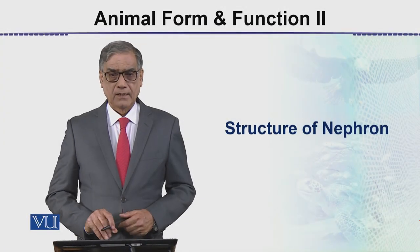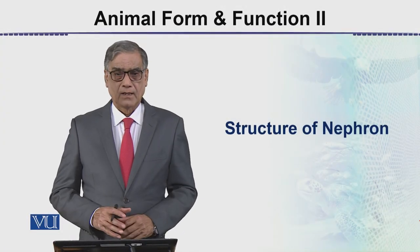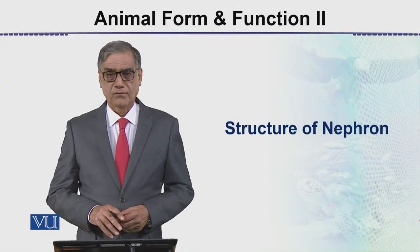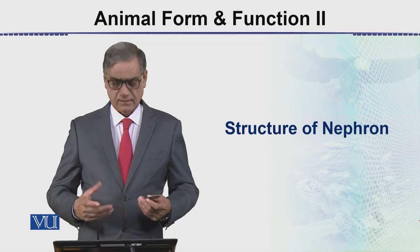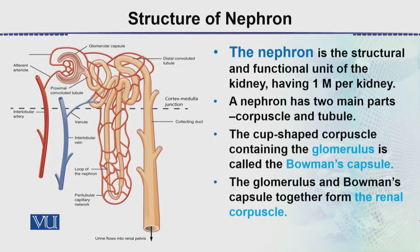This module is the structure of the nephron. The nephron — we are already familiar with it. Here we have a detailed structure of the nephron. It is the structural and functional unit of the kidney, and in each kidney there are about 1 million nephrons.